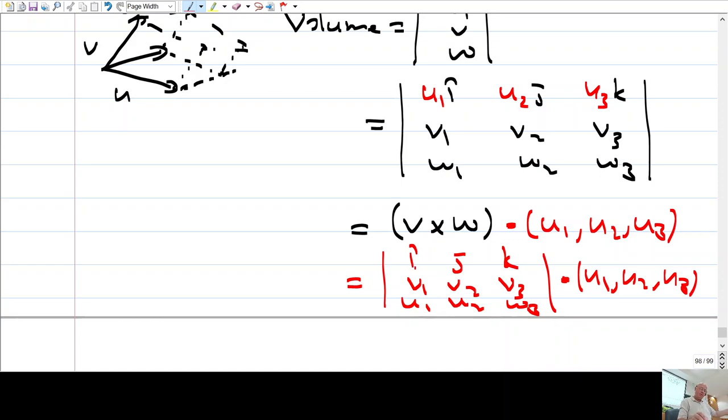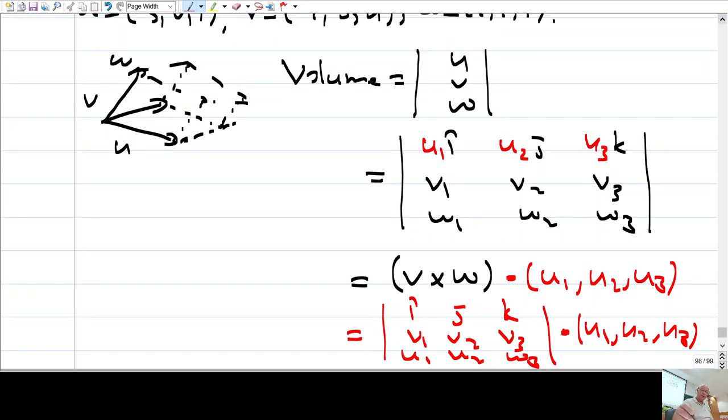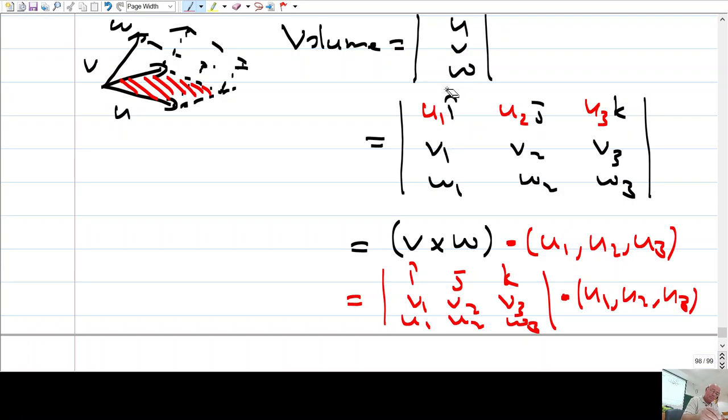İki tanesinin cross product'ını alıyorsunuz, elde ettiğiniz üçüncü vektörü üçüncü vektörle dot product yapıyorsunuz. İki tanesinin cross product'ı taban alanını veriyor, üçüncü vektörle dot product yapmak height ile taban alanını çarpıyor, volume'u veriyor.